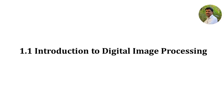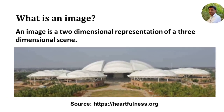The title Digital Image Processing consists of three words: Digital, Image, and Processing. Let us consider the meaning of each word one by one. Let us first consider the word image. What is an image? As you see in this slide, an image is a two-dimensional representation of a three-dimensional scene.